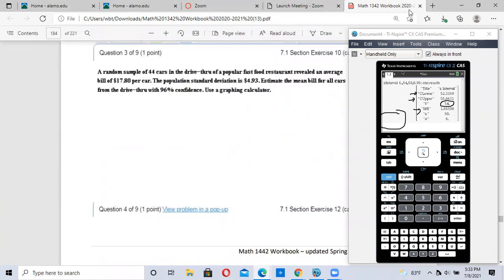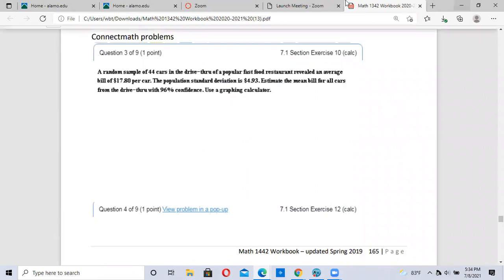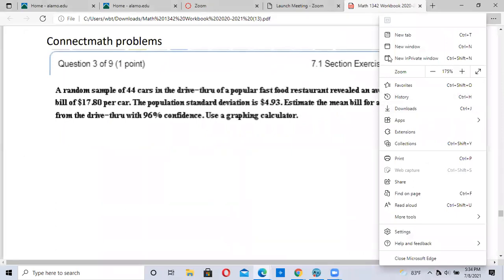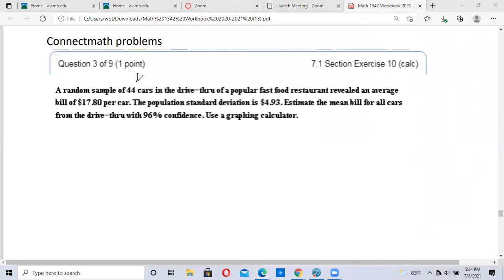We're going to try this problem. A random sample of 44 cars have an average bill of $17.80, so our mean is $17.80. The population standard deviation is 4.93, and we want a 96% confidence interval, which is 0.96. We have all the information and will type it into our TI-Nspire calculator.